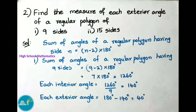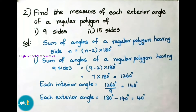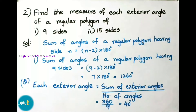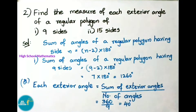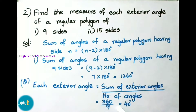Now we shall find the exterior angle. Each exterior angle equals 180 minus interior angle, that is 180 minus 140 equals 40 degrees. We can also find the exterior angle by another method: each exterior angle equals sum of exterior angles divided by number of angles, that is 360 divided by 9, giving 40 degrees.